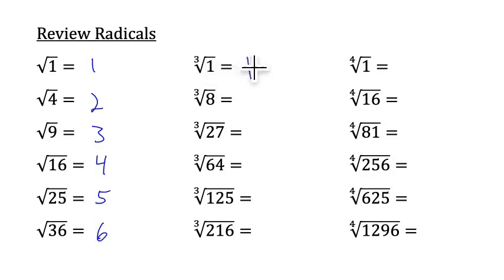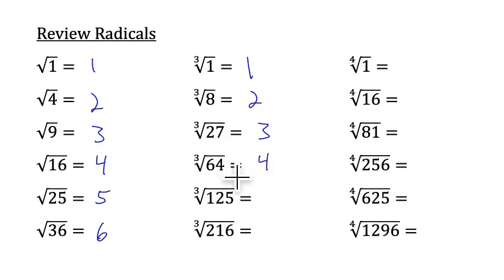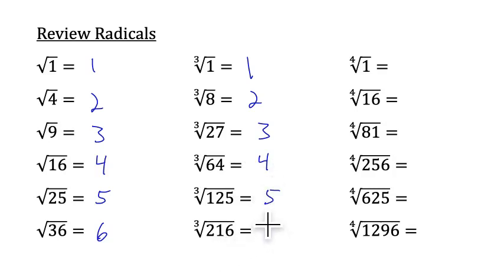Cube roots, or third roots, are just asking us what number multiplied by itself three times equals the number inside the radical. So 4 times 4 times 4 equals 64, so the third root of 64 equals 4. And 6 times 6 times 6 equals 216, so the third root of 216 equals 6.